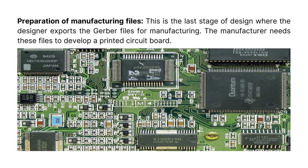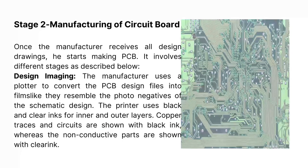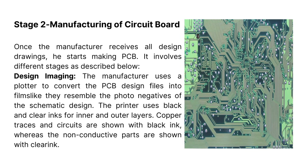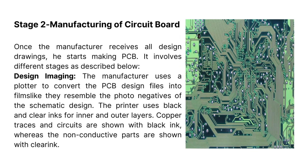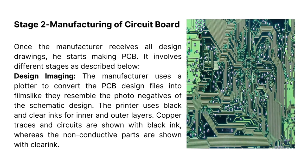Stage 2: Manufacturing of Circuit Board. Once the manufacturer receives all design drawings, he starts making the PCB. Design imaging: the manufacturer uses a plotter to convert the PCB design files into films that resemble the photo negatives of the schematic design. The printer uses black and clear inks for inner and outer layers. Copper traces and circuits are shown with black ink, whereas the non-conductive parts are shown with clear ink.